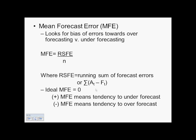We're looking for the running sum of forecast errors, or RSFE, and that's nothing more than the deviation — the actual demand minus the forecasted demand. We ideally want this to be zero.